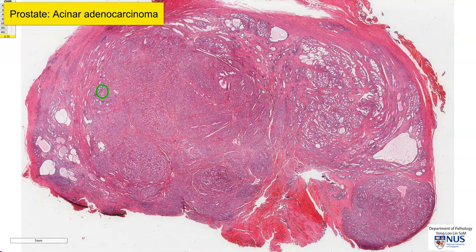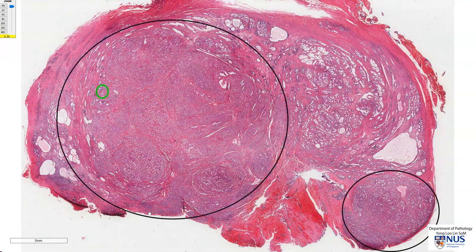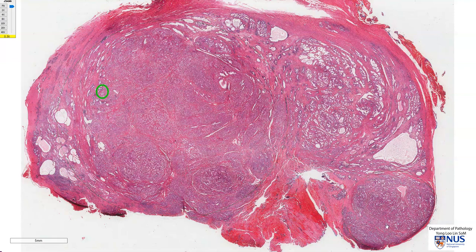We are looking at a complete transverse section of the prostate gland. This is the posterior surface, this is the anterior surface. The lateral lobes are here and here, and we have the anterior and posterior lobes. The location of the tumor is predominantly in the left lateral lobe, with a small area of tumor in the right lateral lobe, and these are both also at the posterior surface of the prostate gland.